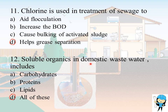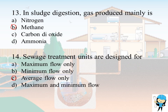Soluble organics in domestic wastewater include carbohydrates, proteins, and lipids. In sludge digestion, the gas produced mainly is methane. Next to methane, carbon dioxide will be produced in larger amounts.